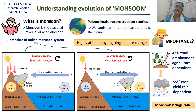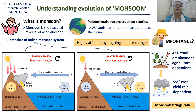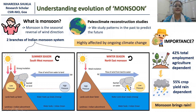Hello everyone, my name is Neharka Shukla and I'm a research scholar at CSIR. I am working on understanding the evolution of monsoon. So what is monsoon? Monsoon is the seasonal reversal of wind direction, and the Indian monsoon system has two branches.